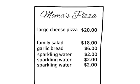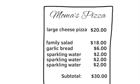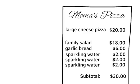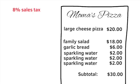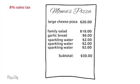large cheese pizza, a family salad, some garlic bread, and some sparkling water. The subtotal was $30. The sales tax in this part of the state is 8%. An 8% sales tax on $30 would be $2.40, making the total $32.40.